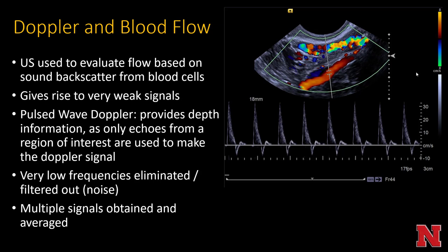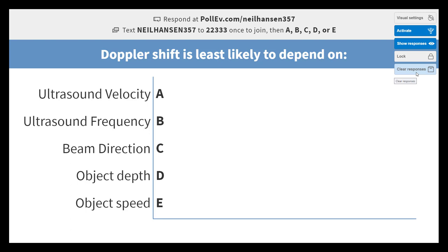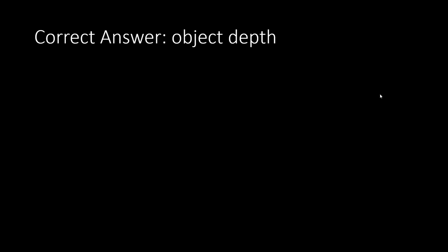Very low frequencies are filtered out as noise, and multiple signals are averaged together to create a coherent result. The Doppler shift is least likely to depend on depth — depth doesn't matter much as long as you can see the vessel.